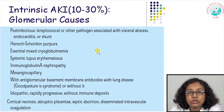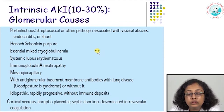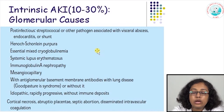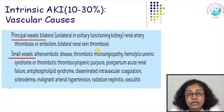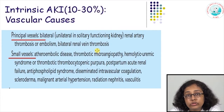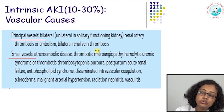Intrinsic AKI can also occur when glomerular tissue is damaged, though less commonly. It can occur in any glomerular disease — acute nephritic syndromes like post-infection glomerulonephritis, Henoch-Schönlein purpura, lupus, IgA nephropathy, anti-GBM disease, or vasculitis-associated glomerular diseases. The larger blood vessels may be affected in renal artery thrombosis or bilateral renal vein thrombosis. Small vessels may be involved in thrombotic microangiopathy — hemolytic uremic syndrome (HUS), thrombotic thrombocytopenic purpura (TTP), antiphospholipid syndrome, DIC, or vasculitis — all leading to acute kidney injury.